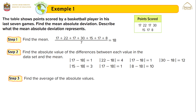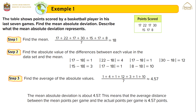Step 3: find the average of the absolute values. We add 1 plus 4 plus 1 plus 12 plus 3 plus 1 plus 10 and divide by 7. The average is approximately 4.57. This is the mean absolute deviation. The mean absolute deviation of about 4.57 means that the average distance between the mean points per game and the actual points per game is 4.57.